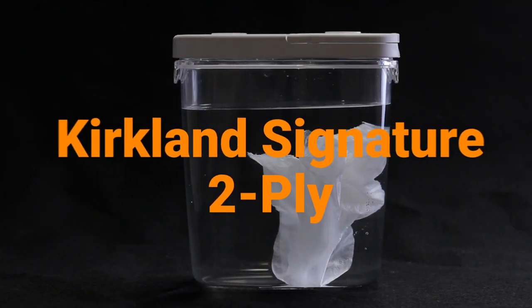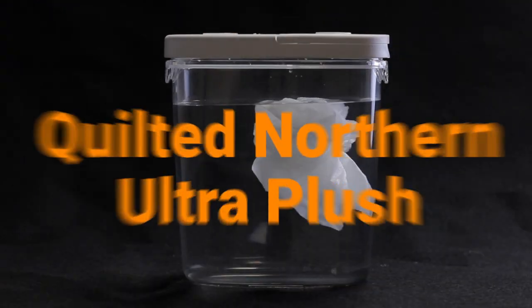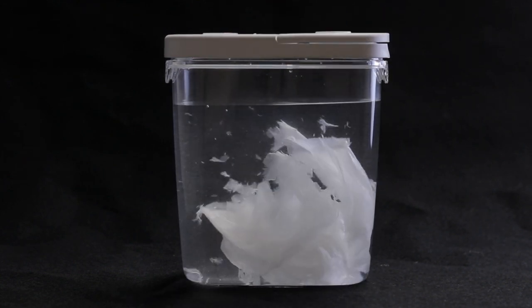Kirkland Signature 2-ply performed really well in cost and softness and plumbing health. Quilted Northern Ultra Plush was pretty soft but failed when it came to pricing and plumbing health.